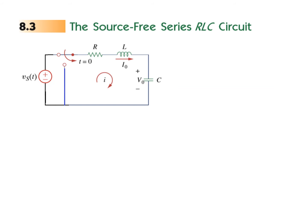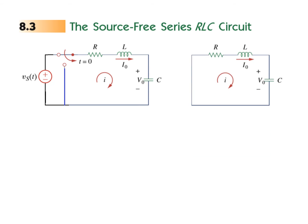When we talk of a source-free series RLC circuit, you can see the resistor, inductor, and capacitor are in series. A source is connected which is charging the inductor and capacitor. When we disconnect the switch at T equal to zero, the voltage source is removed, and our circuit becomes source-free.